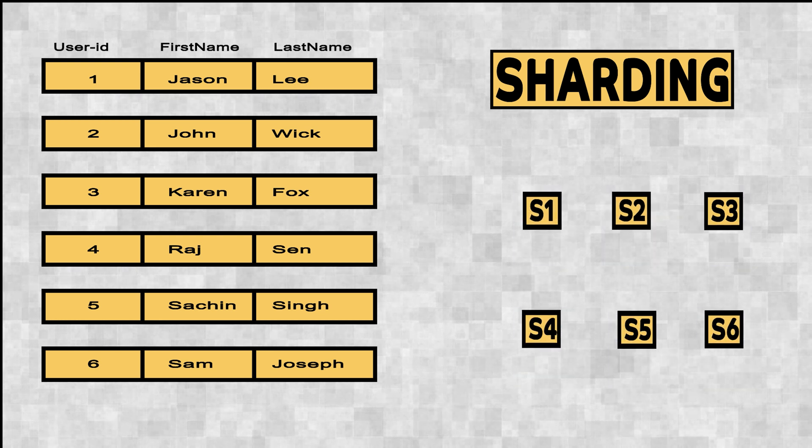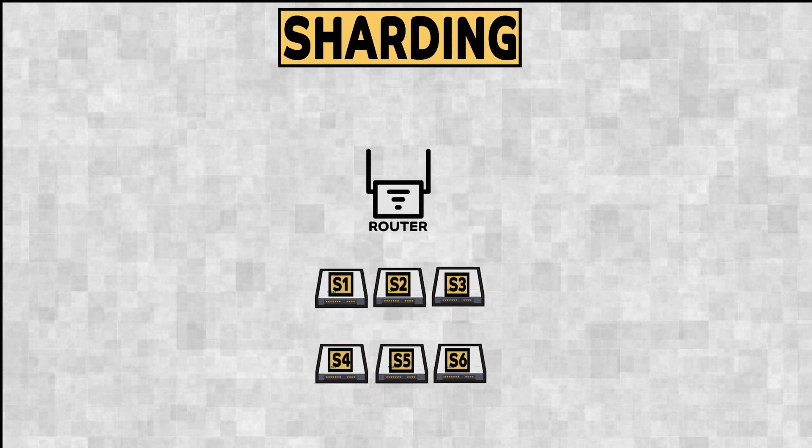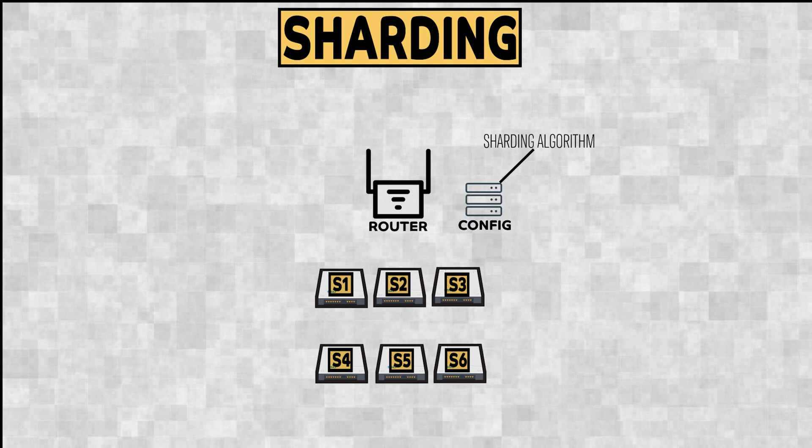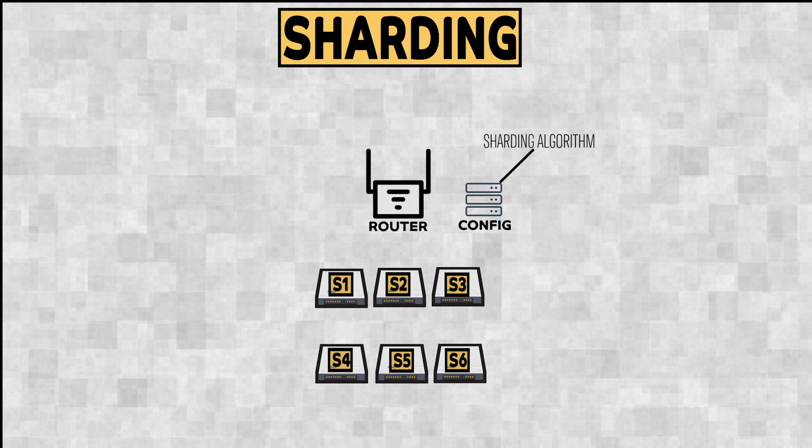In our example, we'll have the shards in different hard disks. We'll need a router and a config server which encapsulates the sharding algorithm and has information on how sharding was done.